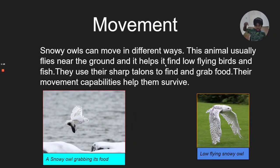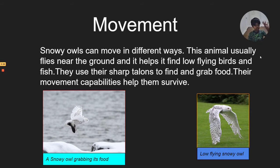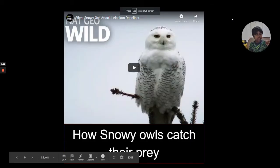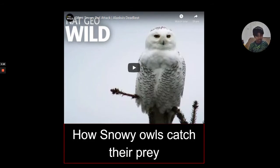This is the movement of a snowy owl. Snowy owls can move in different ways. This animal usually flies near the ground and uses its sharp talons to grab food. In these two pictures it shows a snowy owl flying near the ground and a snowy owl grabbing its food using its talons.